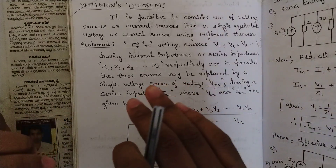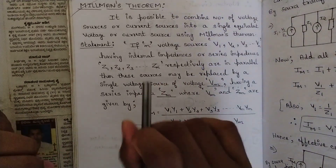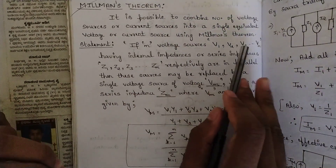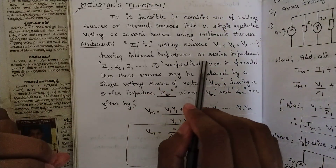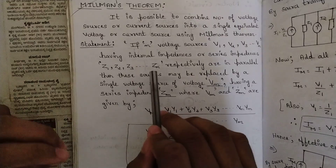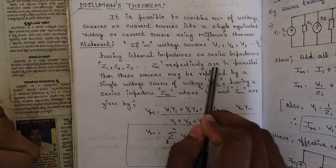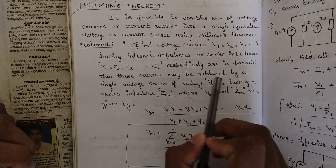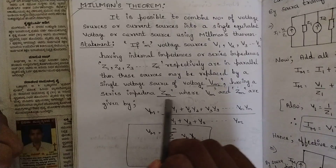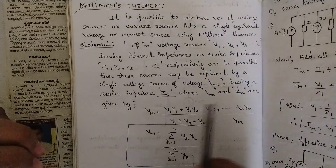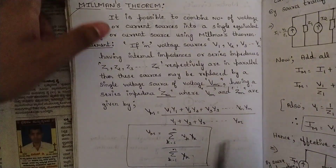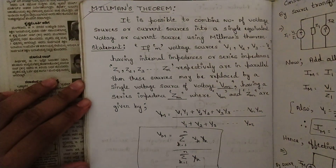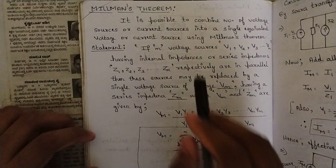That's the entire task — similar to how source transformation is used, and I'll explain how they are interlinked. The statement: if n number of voltage sources V1, V2, V3 up to Vn, having internal or series impedances Z1, Z2, Z3 up to Zn respectively, are in parallel, then these sources may be replaced by a single voltage source Vm having series impedance Zm, where Vm and Zm are given by two separate formulas.